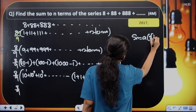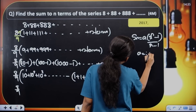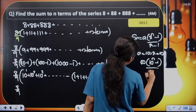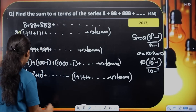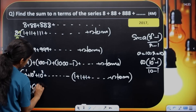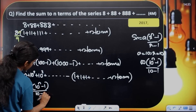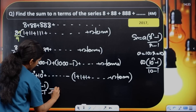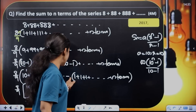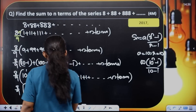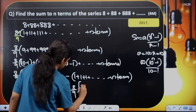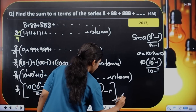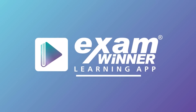Substituting a equals 10 and r equals 10, Sn equals 10 into (10 to the power n minus 1) divided by (10 minus 1). Then substituting into our expression: 8 by 9 into 10 into (10 to the power n minus 1) divided by 9, minus n (since 1 repeated n times equals n). The final answer is 8 by 9 into [10(10 to the power n minus 1) divided by 9 minus n].